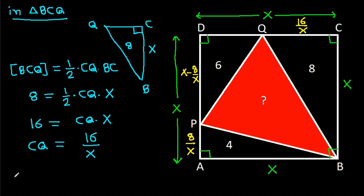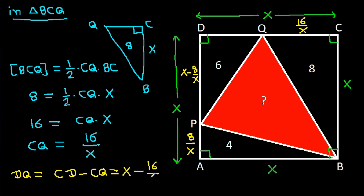And DQ will be equal to CD minus CQ, and CD is X minus CQ is 16/X, so DQ = X minus 16/X.